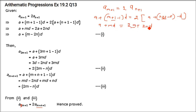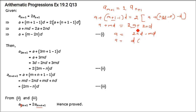Now, take a on one side and the d terms on the other side. So 2a minus a is a, and you have 2nd minus md. You can take common: this is 2nd minus md. So a equals 2nd minus md, or factoring out d: a equals d(2n minus m).